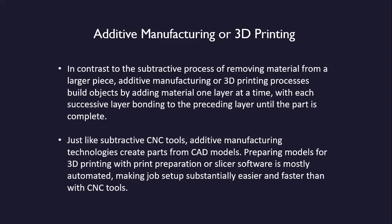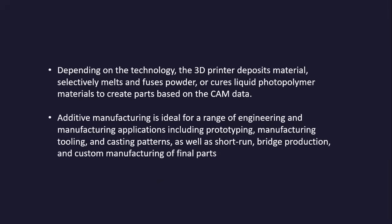Just like subtractive CNC tools, additive manufacturing technologies create parts from CAD (computer-aided design) models. Preparing models for 3D printing with slicer software is mostly automated, making job setup substantially easier and faster than with CNC tools. Depending on the technology, the 3D printer deposits materials, selectively melts and fuses powder, or cures liquid photopolymer materials to create parts based on CAM (computer-aided manufacturing) data. Additive manufacturing is ideal for prototyping, manufacturing tooling, casting patterns, short-run bridge production, and custom manufacturing of final parts.